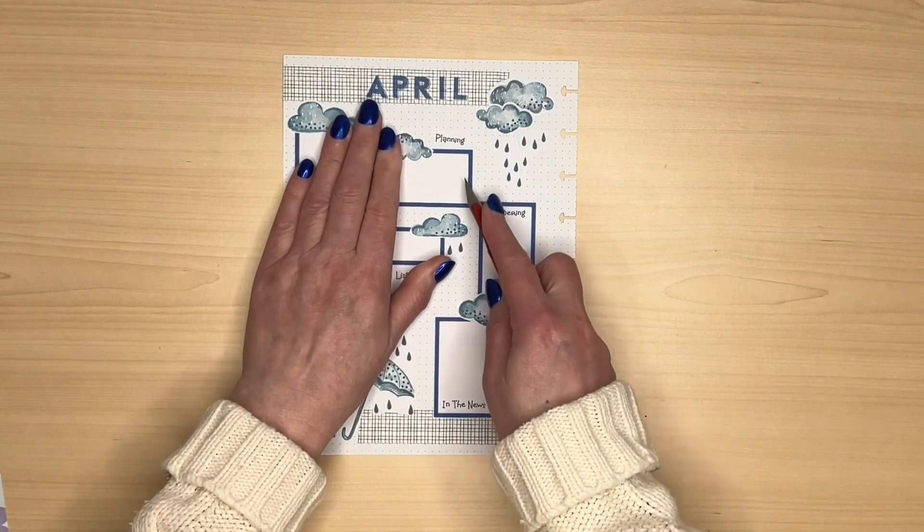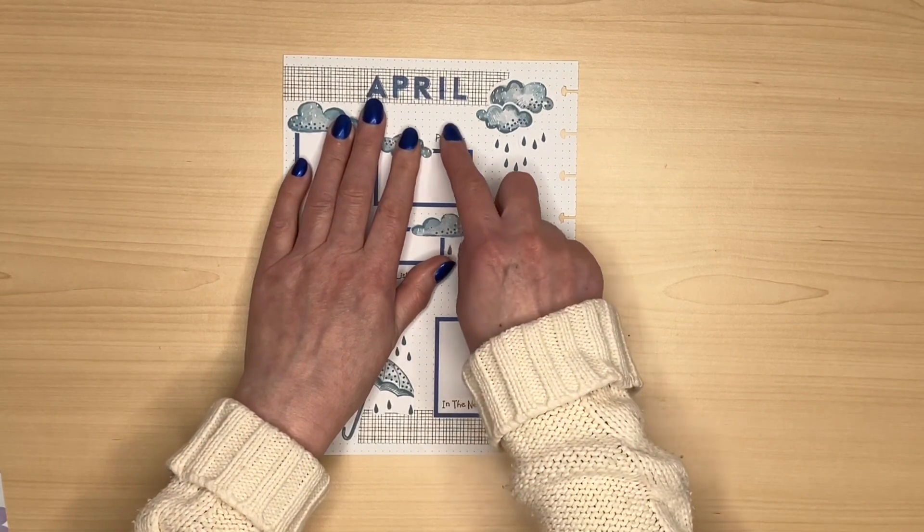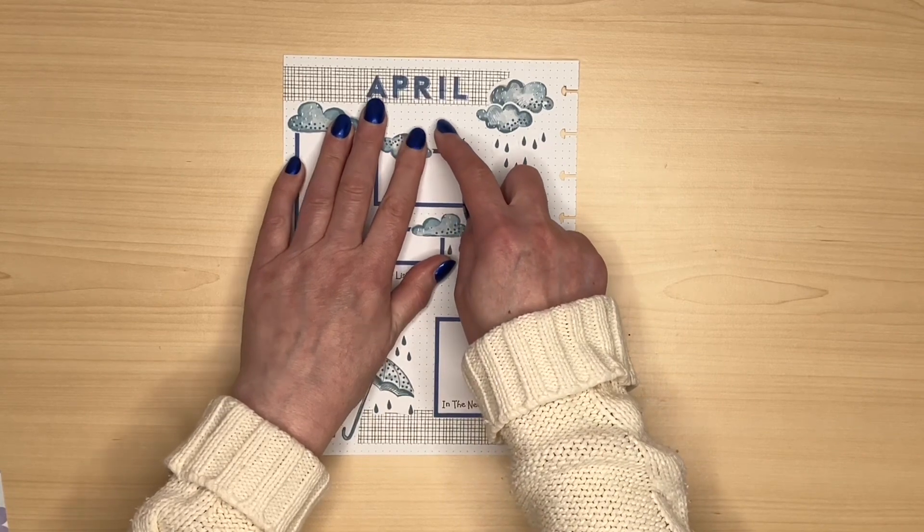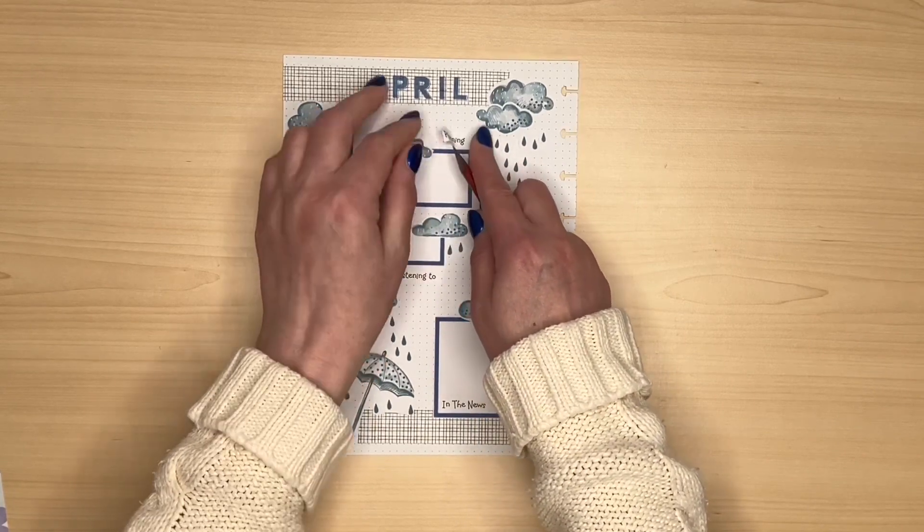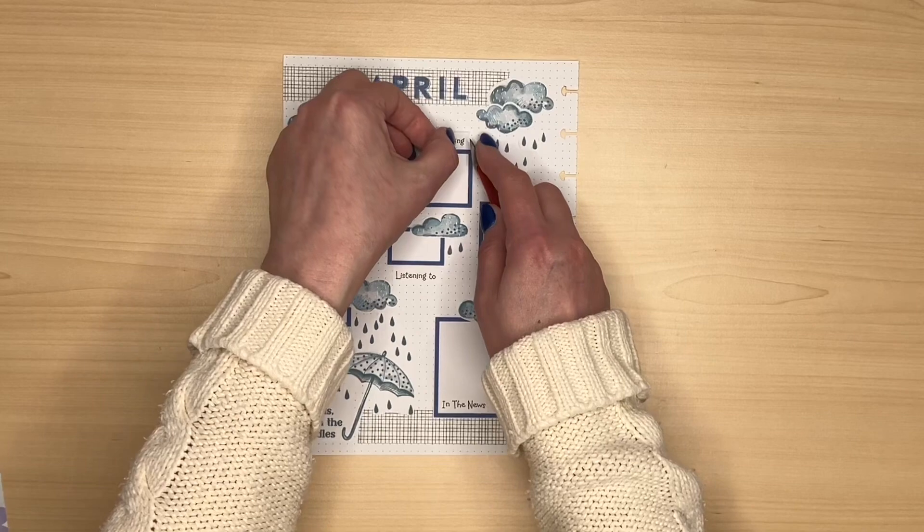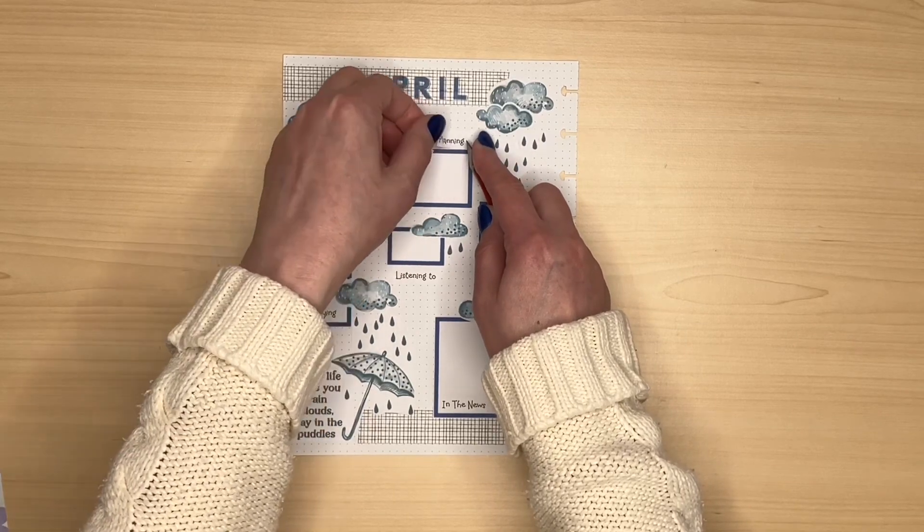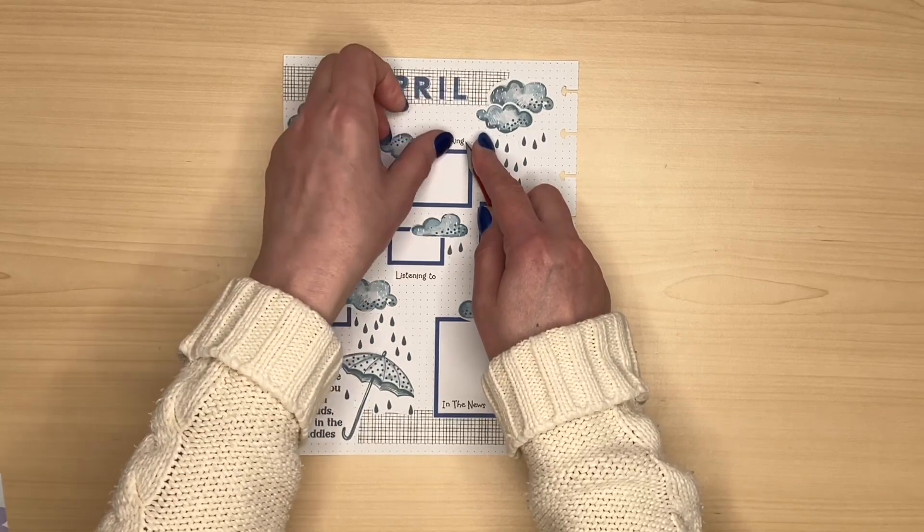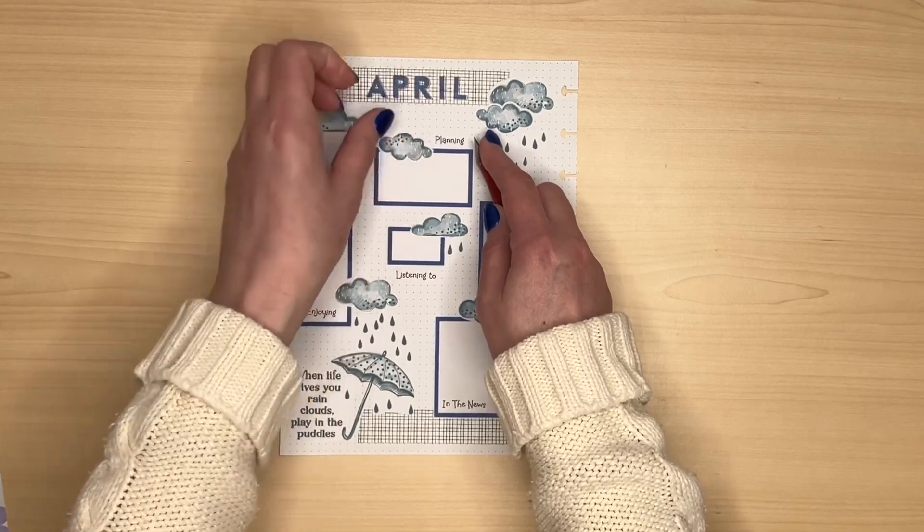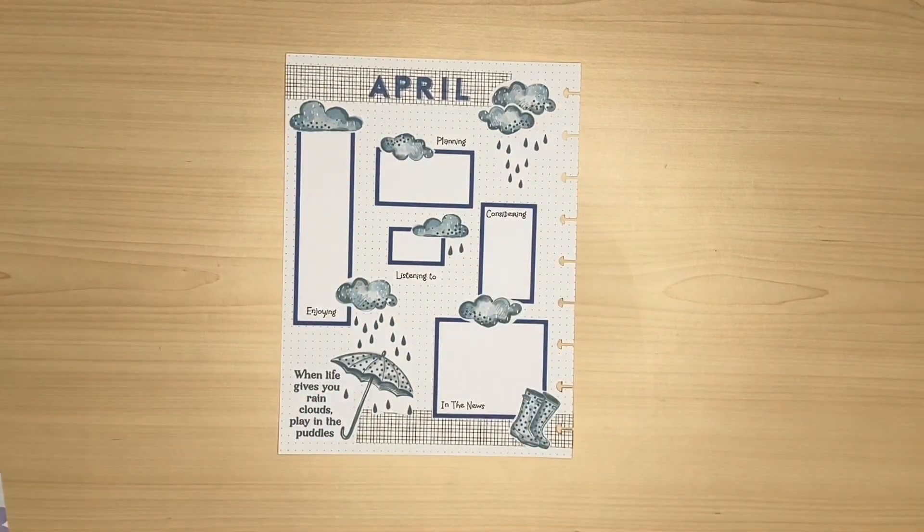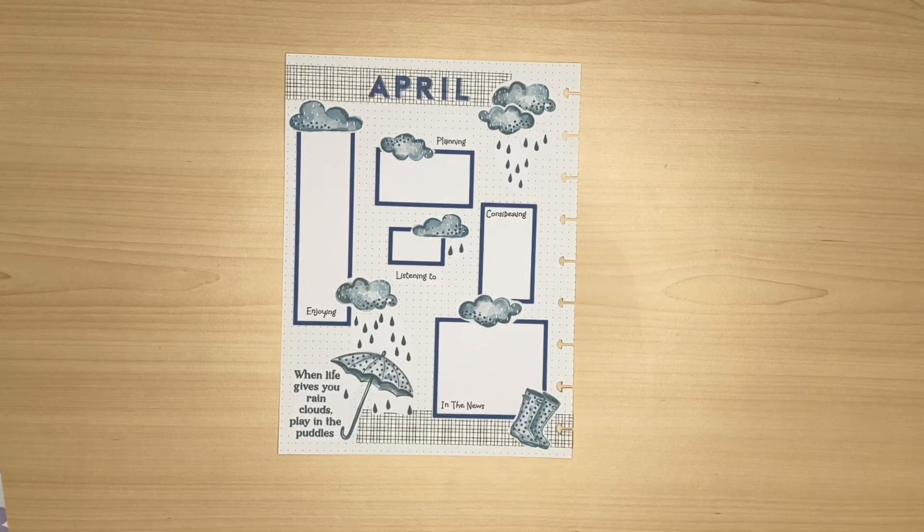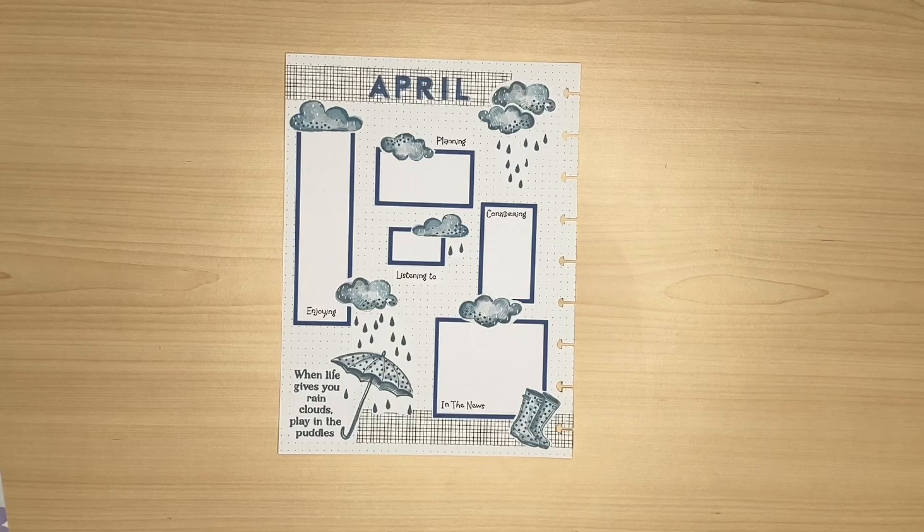I just need to straighten up that planning I've noticed it's crooked and I am a little bit of a perfectionist in my planning and in everything so I can't let it go. I think that's a bit better. Hope you have a great April with less of the rain and more of the sun. Thanks for watching happy planning take care and see you soon.